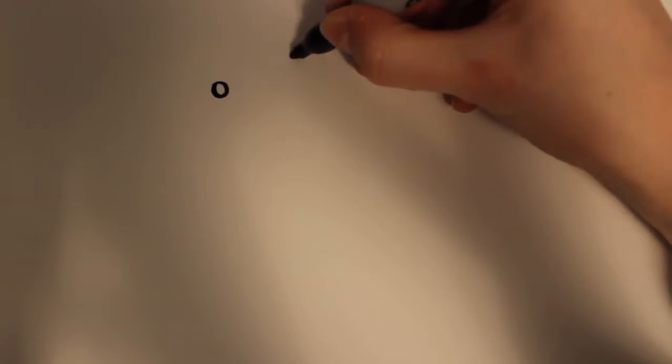First you start off by drawing two little circles right across from each other and then just kind of make them thicker by going around them a few times. Just like that.